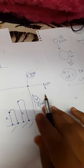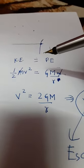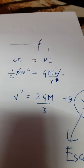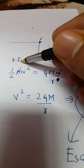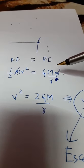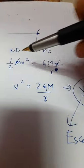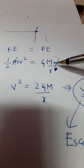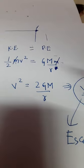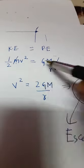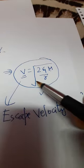This escape velocity is very, very important when we are dealing with black holes. As the ball is having escape velocity, it has kinetic energy, and as it is at height it has potential energy, and they are equal. So: ½mv² equals GMm/r. When you rearrange these two formulas, you get v equals the square root of 2GM/r. This is the formula of escape velocity, where G is the gravitational constant, M is the mass of the earth, and r is the radius of the earth.